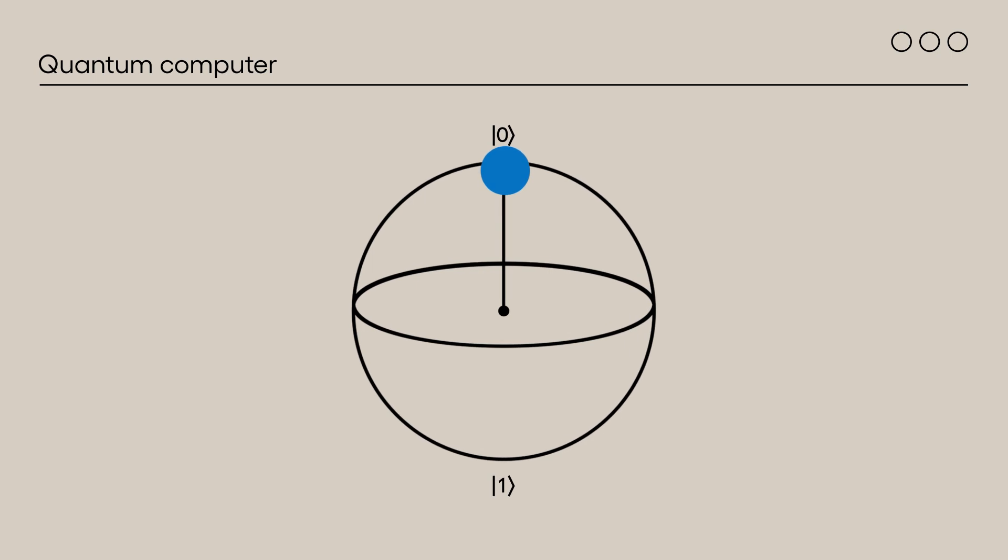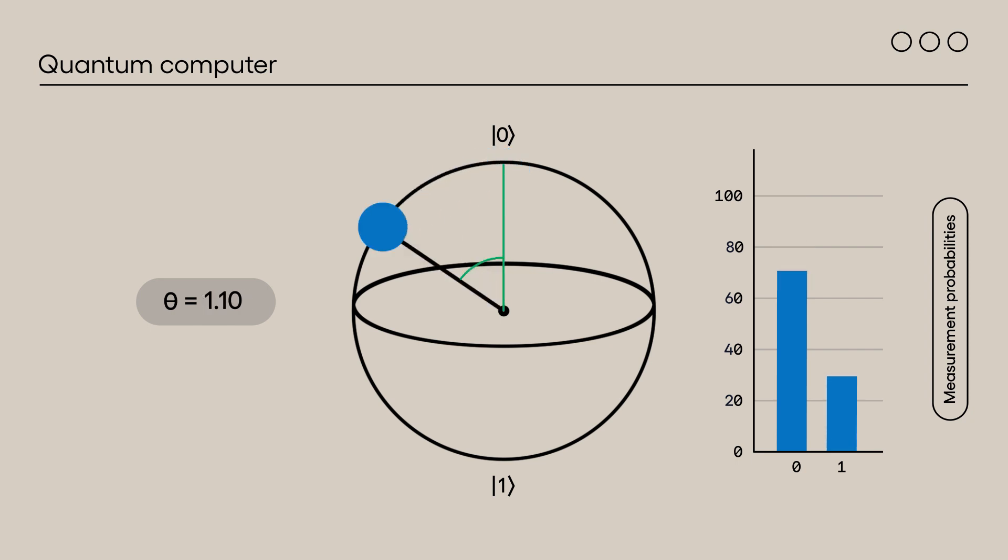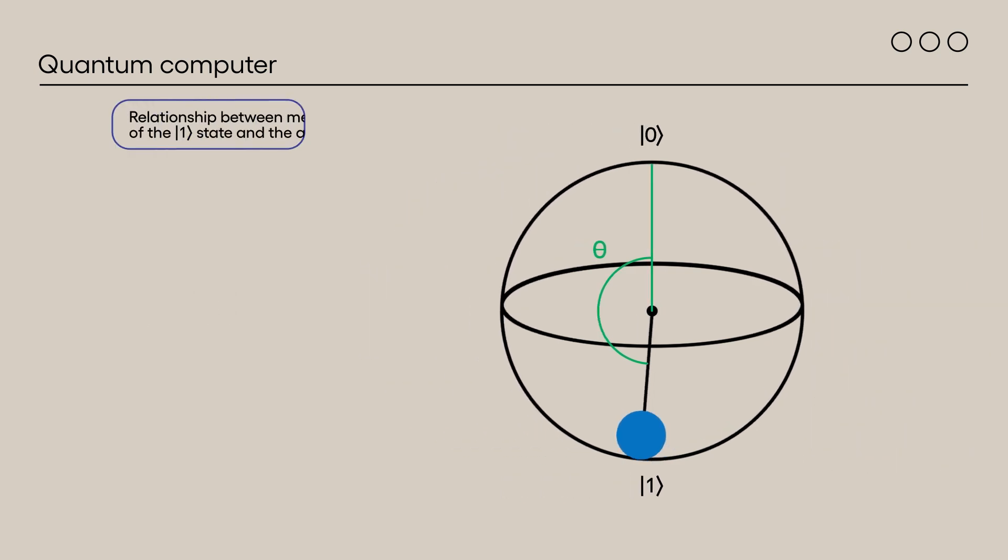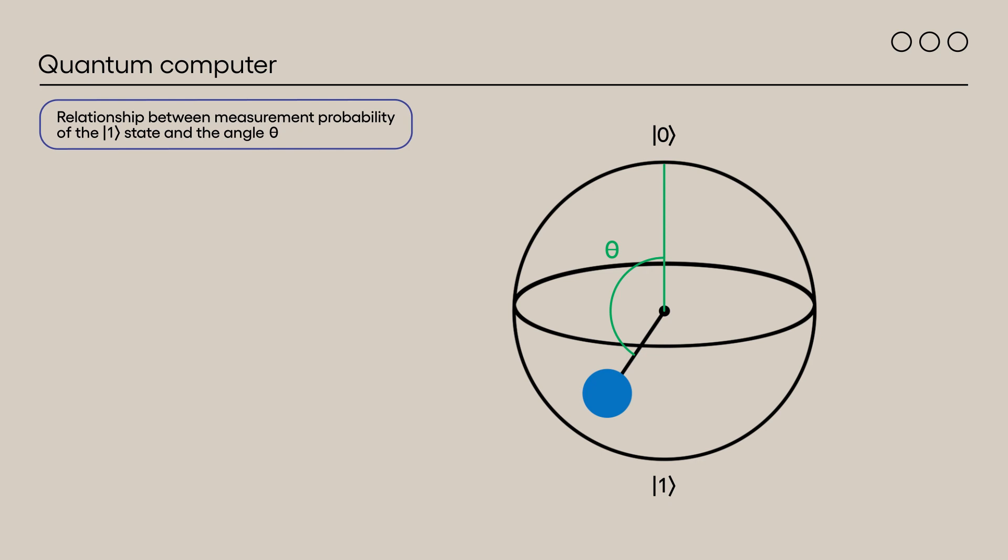Before we begin, let's see how the RY gate can control the probability of measuring 0 and 1. For an angle theta equals 0, the qubit is in the 0 state and the probability of measuring 0 is 100%. Conversely, for an angle theta equals pi, the qubit is in the 1 state and the probability of measuring 1 is 100%. For an arbitrary angle theta, the probability of measuring 1 is... For a given probability P1, we find the angle theta using the following relation.